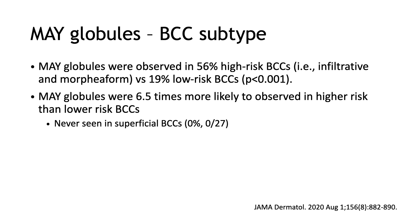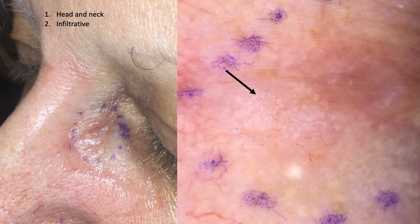Now, what about BCC subtype and MAYG globules? MAYG globules were observed in 56 percent of high-risk BCCs — these were infiltrative and morpheaform — versus 19 percent of low-risk BCCs, and this was statistically significant. MAYG globules were 6.5 times more likely to be observed in higher-risk than lower-risk BCCs, and more importantly, they were never seen in superficial BCCs.